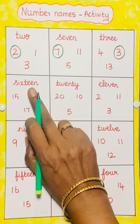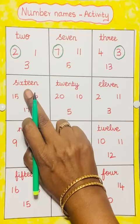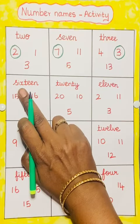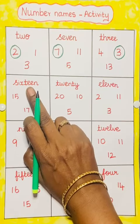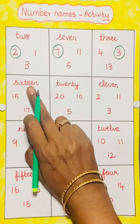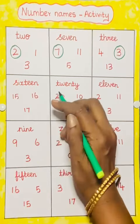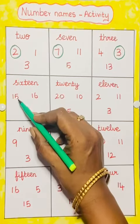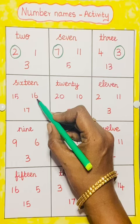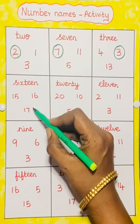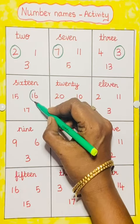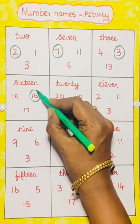Read the number name: 16. S-I-X-T-E-E-N. 16. See, this is 15, this is 16, this is 17. So we have to circle the number 16.